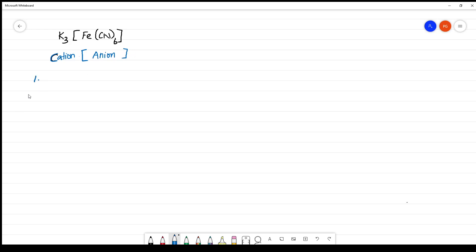So how to name the anionic complex? The first thing is name the cation. Whichever is first, you have to name the cation. What is the name of the cation? It is potassium.